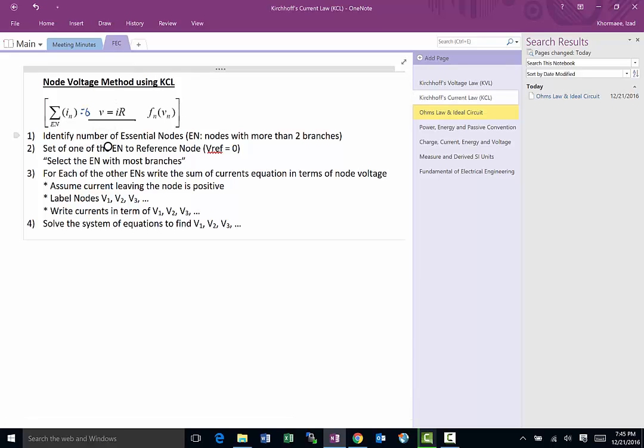So basically instead of writing it this way, we're going to write that i is equal to v over r. And hopefully that becomes clear as we go down.